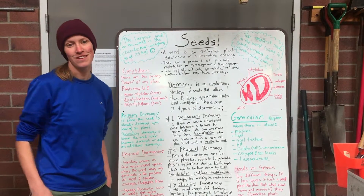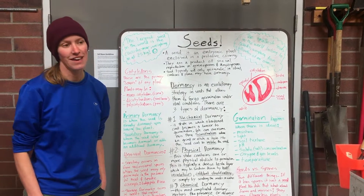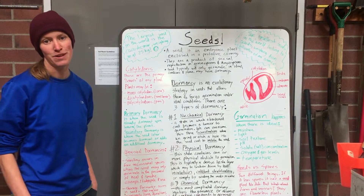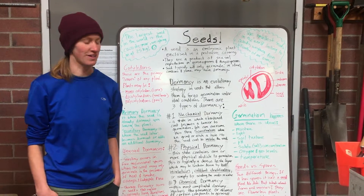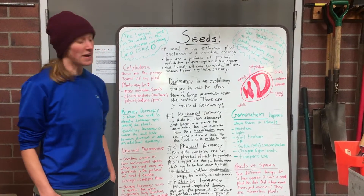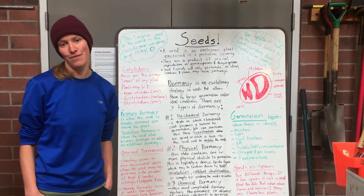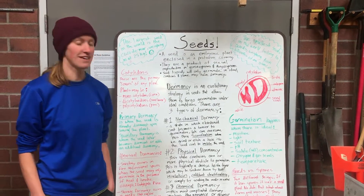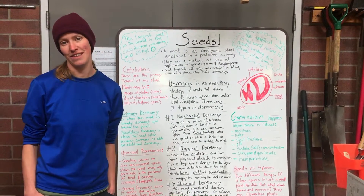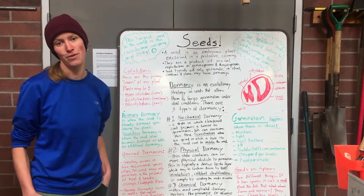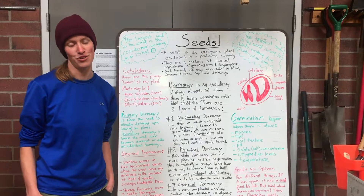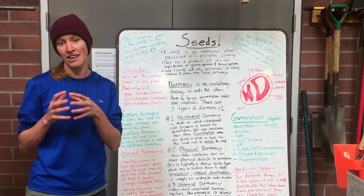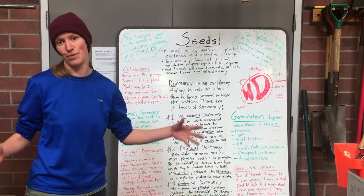However, seeds that have adapted to the areas that they've been growing in for a long time may have an evolutionary trait called dormancy, in which case they will forego the ability to germinate under ideal conditions until they are ready.